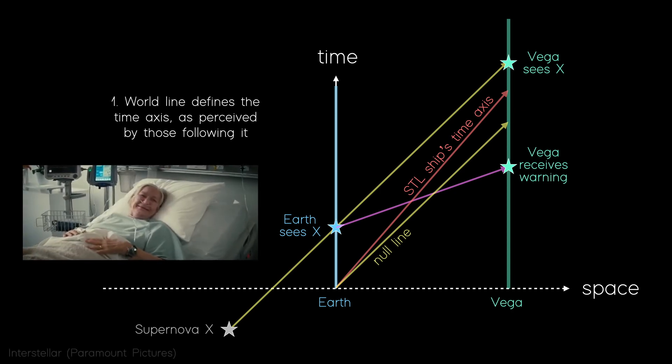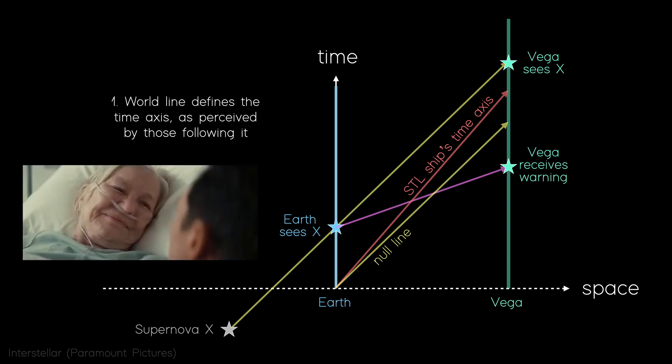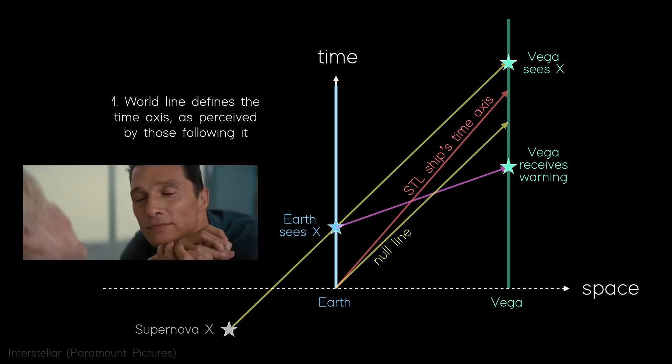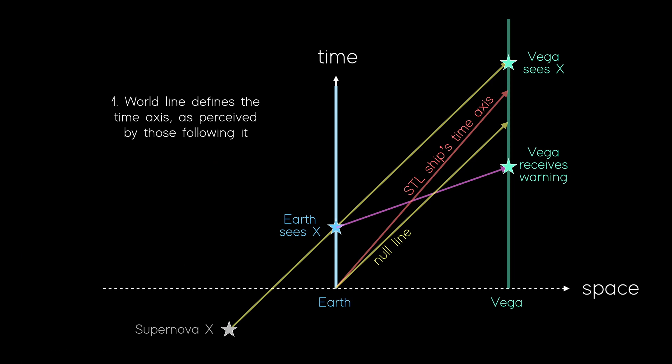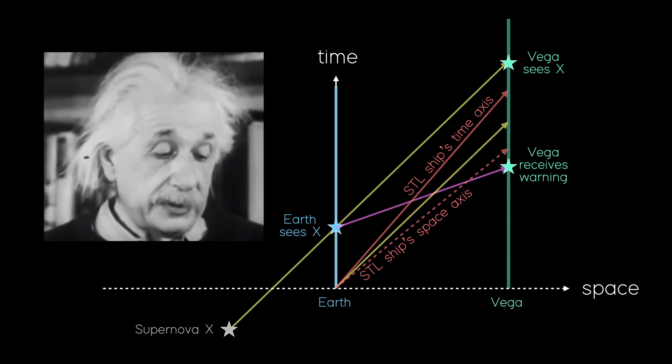The distortion of time is one of those mind-bending consequences of special relativity, which our Journey to the End of the Universe video explores in much more depth. Now, remember rule number two, that the space axis flips the time axis about the null line. So as perceived by the crew, their space axis actually lives here. This is a remarkable consequence of Einstein's rule that the speed of light is the same for all observers. Time and space bend to accommodate its constancy in all frames of reference.